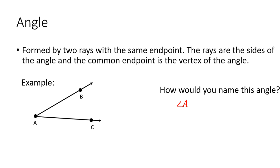You could also name it by saying angle B, A, C. Notice that the vertex is in the middle when you are naming an angle that is critical. And then you could also say angle C, A, B. And those are the only ways that you could name this angle.